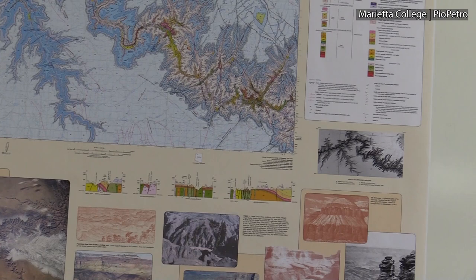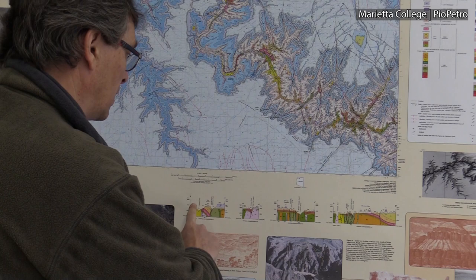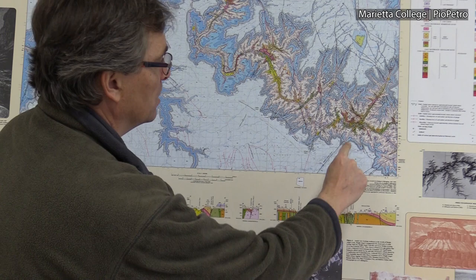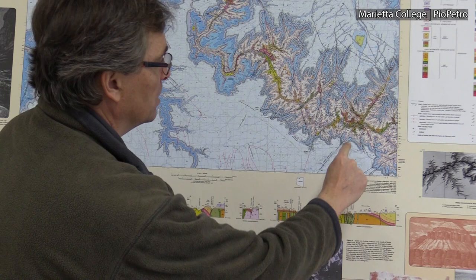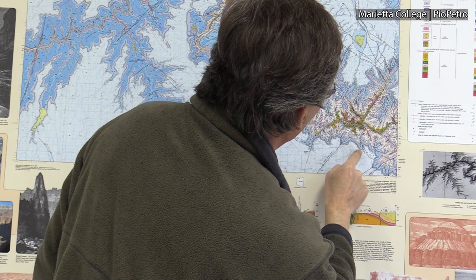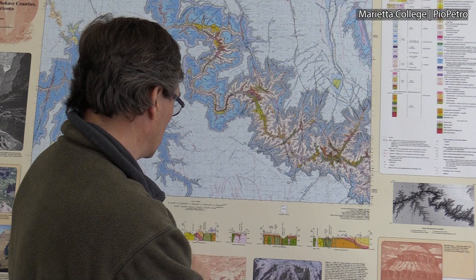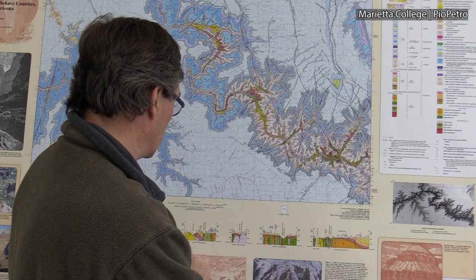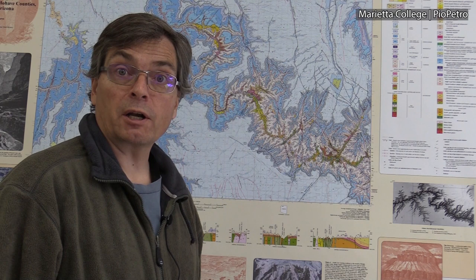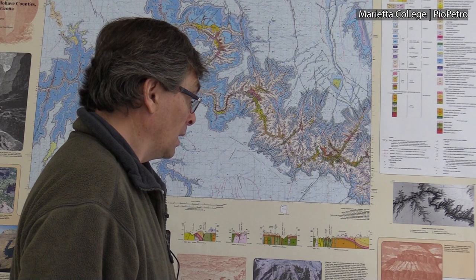Also on this map are several cross sections that geologists have constructed of the canyon, labeled A to A prime, B to B prime, C to C prime, and D to D prime. D to D prime runs along the bottom of the canyon and C to C prime is perpendicular to it, cutting across D to D prime. Cross section B to B prime and A to A prime are in different locations, so you can see different views of rock attitudes in both the deeper and shallower parts of the canyon.